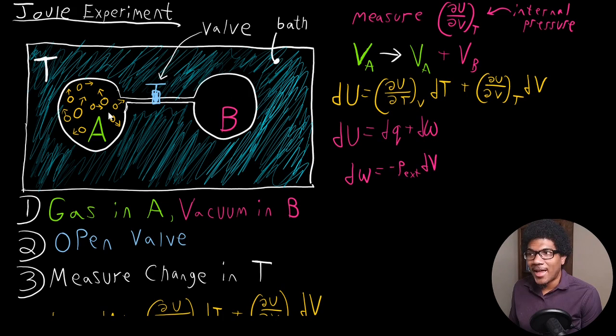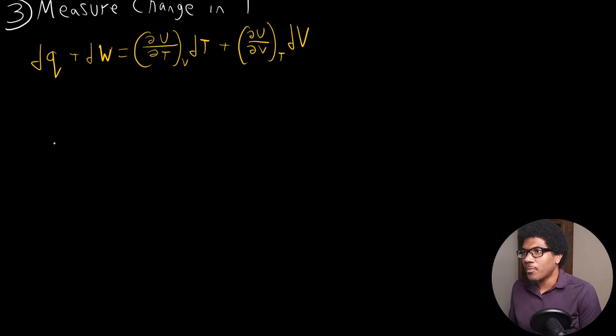Well, if there is no external pressure being applied to your gas, then you're doing a free expansion. And for a free expansion, the work done is zero. So that's the first simplification that we can make. We know that the work is going to be zero, so we can go ahead and get rid of that term. So we know that all of this on the right-hand side is just going to be equal to dQ.